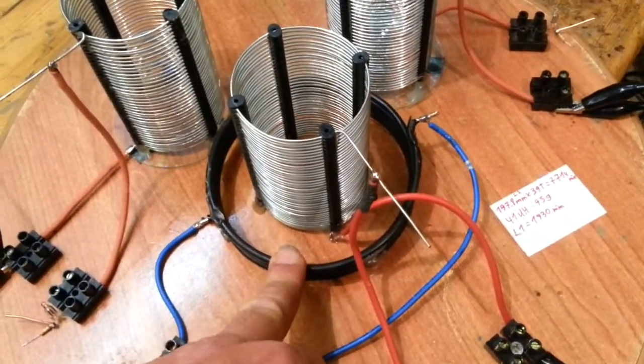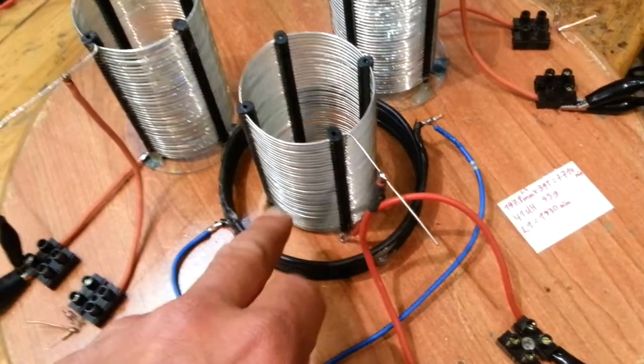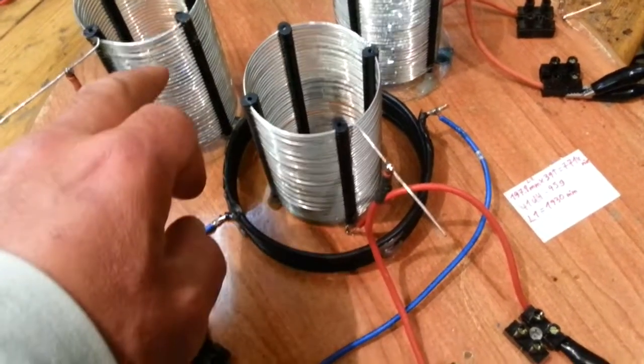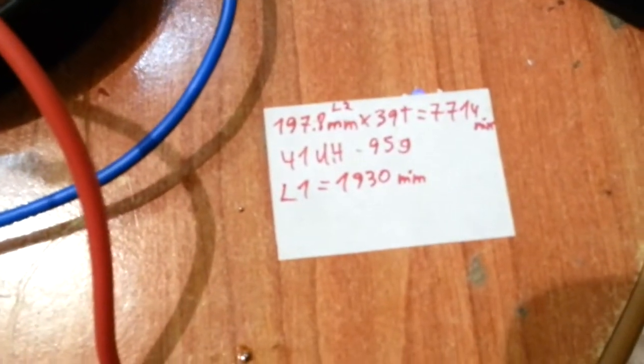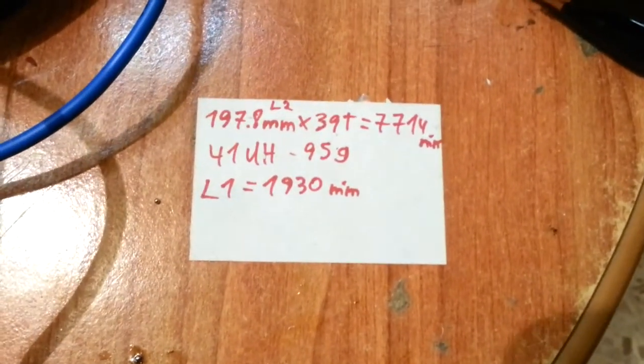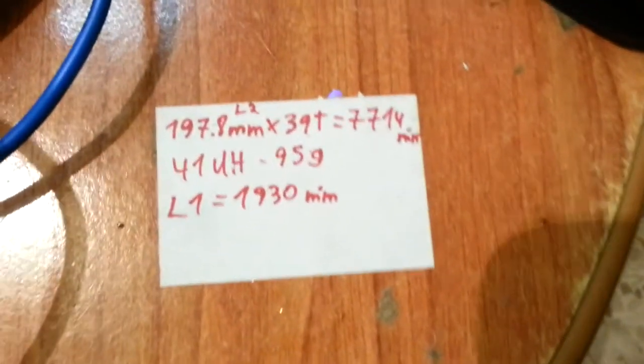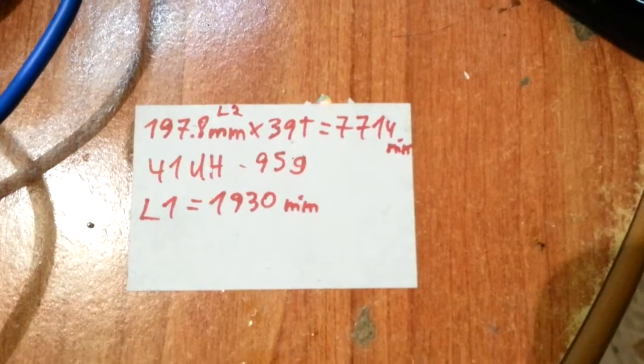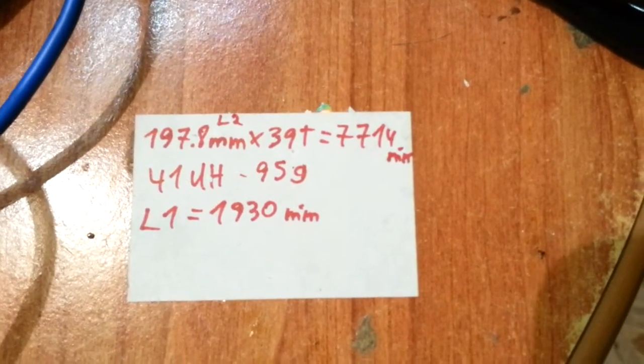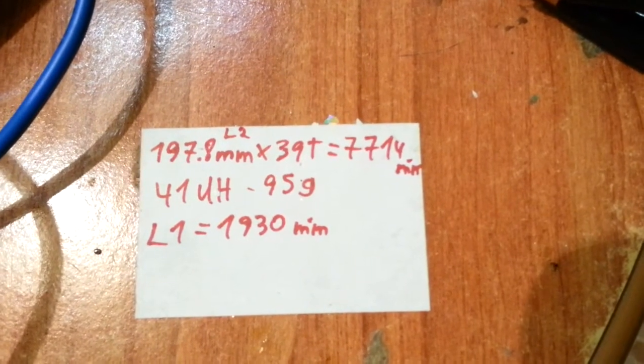This primary is quarter of the length and the weight of this one and this one. These three are 41 micro-Henrys as you can see. The L2 is one meter, 97.8 centimeters, doubled 39 turns.